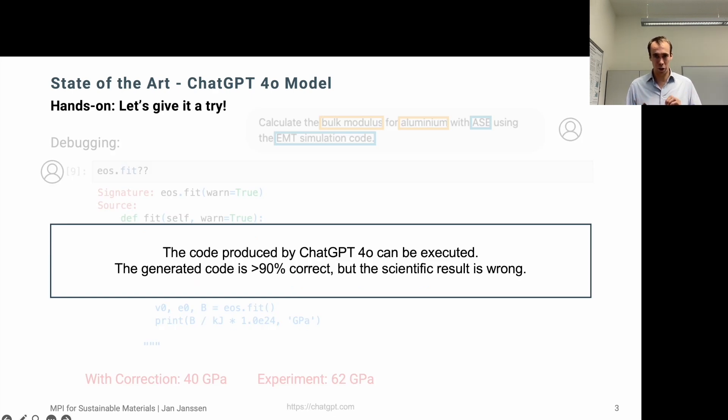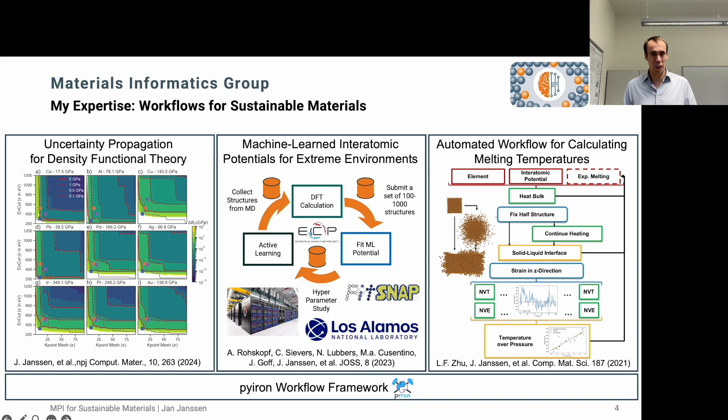So what can we learn here? First of all, the Python code produced from the large language model can be executed. That's already a success. Second, it's 90% correct. But we also have to remind ourselves that 90% correct is not enough for scientific discovery. We need to be able to trust our simulation methods. Otherwise they're useless if unit conversion is missing. So this is really where our expertise in the materials informatics group comes in. We develop workflows to design sustainable materials.